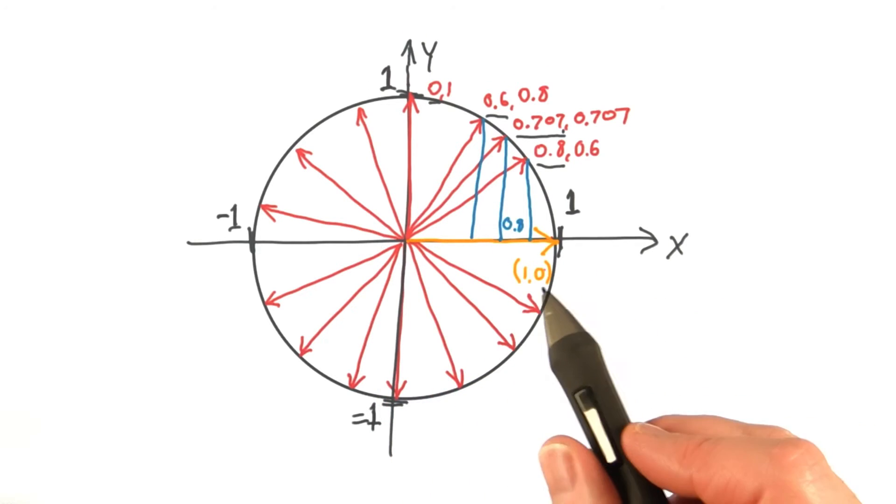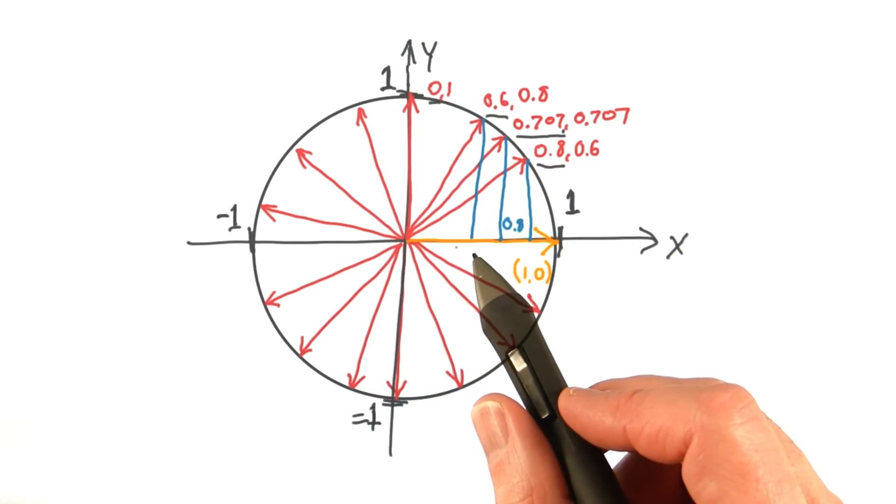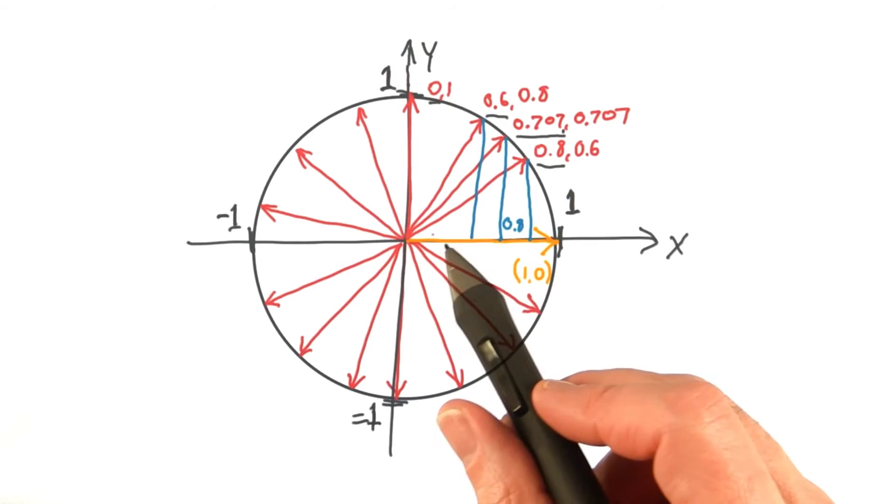I've known this fact for 30 years, but it's still slightly magical to me that taking a dot product of two normalized vectors, which just multiplies and adds them together, gives you a trigonometric function.